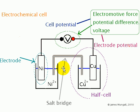This salt bridge here prevents a buildup of charge in the solutions as the redox reactions occur. It does this by being a source of unreactive ions such as potassium (K+) and nitrate (NO3-), which can flow into either half cell and balance the charge.